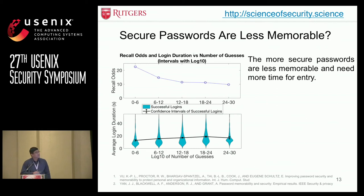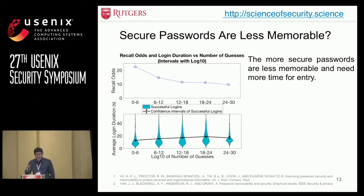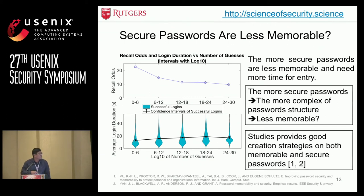Finally, we examined the relationship between password security and memorability. We used the neural network to estimate password guessability. We found that more secure passwords are less memorable and require more time for entry, because complex password structures tend to lead to less memorable passwords. Of course, this is not always true — there are works presenting good password creation strategies that can make passwords both memorable and secure.